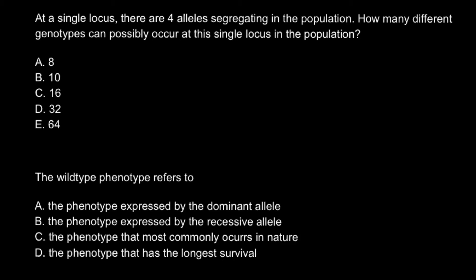So here is the first question. At a single locus there are four alleles segregating in the population. How many different genotypes can possibly occur at this single locus in the population? And here are the five answers to choose from. So how are we going to solve this problem?